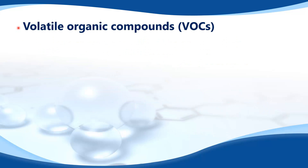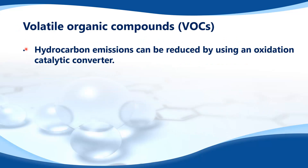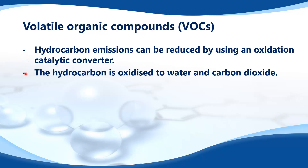Volatile organic compounds. Hydrocarbon emissions can be reduced by using an oxidation catalytic converter or a three-way catalytic converter. The hydrocarbon is oxidized to water and carbon dioxide.